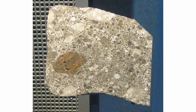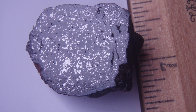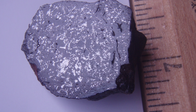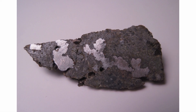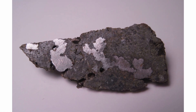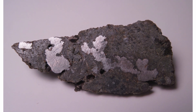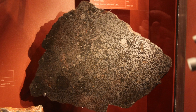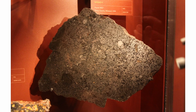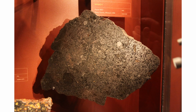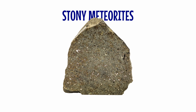Mesosiderite meteorites are breccias — a variety of rock composed of broken fragments of minerals or rock cemented together by a finer material. The fragments are roughly centimeter-sized and contain a mix of igneous solidified silicate and metal clasts — rocks made of pieces of older rocks. Mesosiderites form when debris from a collision between two asteroids is mixed together; in the crash, molten metal mixes with solid fragments of silicate rocks. Mesosiderites can therefore record the history of both meteorites and reveal a snapshot of the conditions required for asteroids to melt and form iron cores.